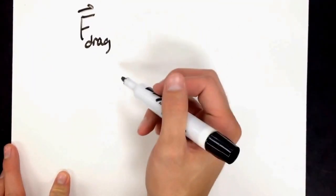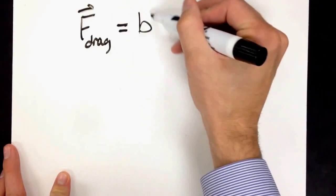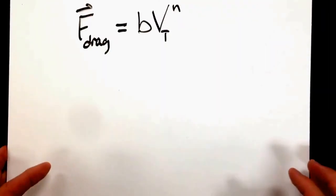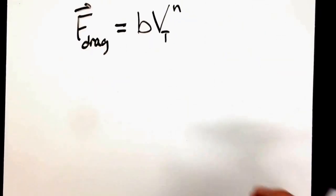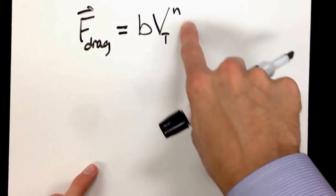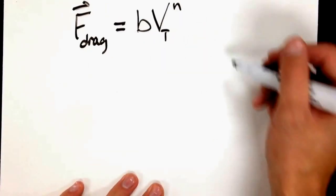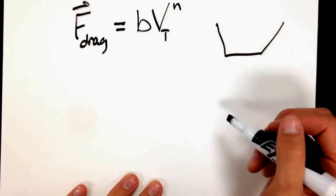Drag force can be defined by this equation, where b is the drag coefficient of the object, V_T is the terminal velocity, and it's all taken to the power n. During the coffee filter lab, your goal was to figure out what that n value was.